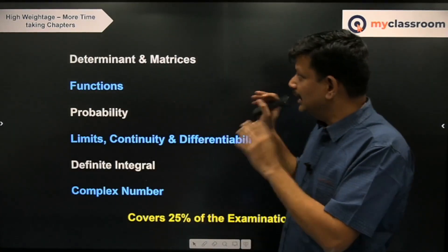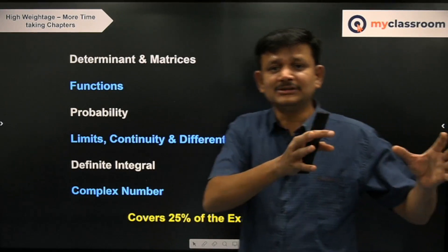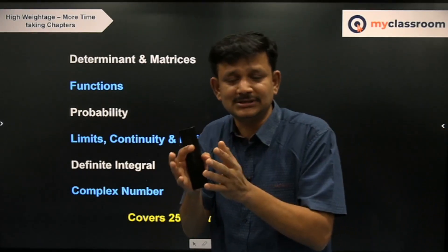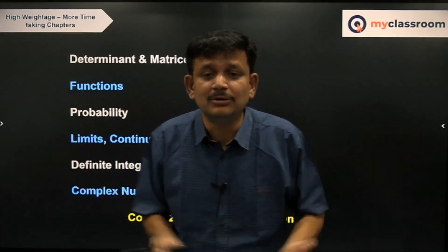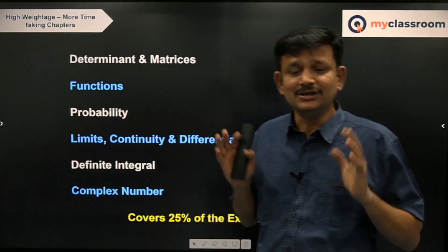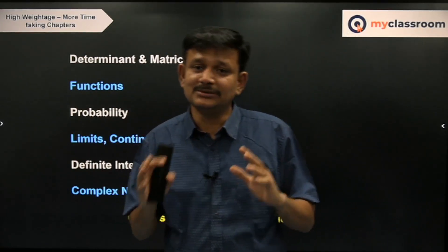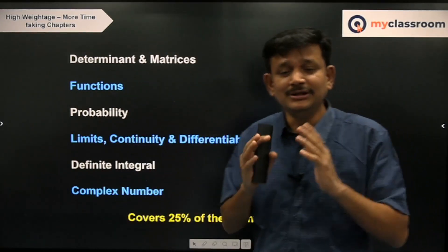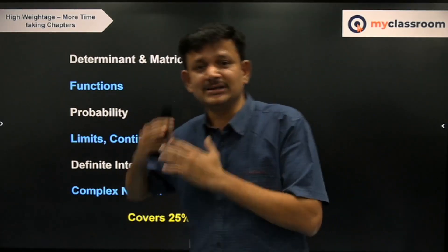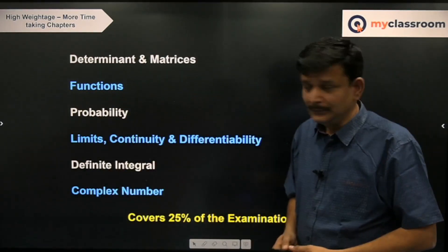So till now — 50 percent in the high weightage and 10 percent in the low weightage chapters — overall you are able to complete 60 percent of your syllabus. That means you are ready to score 60 marks. Now let us focus on the remaining 40 marks and how to get them.